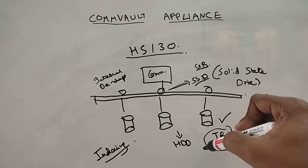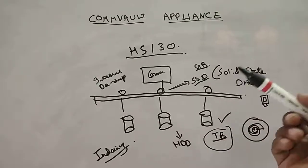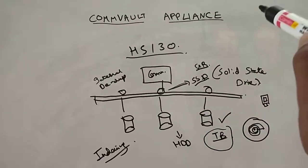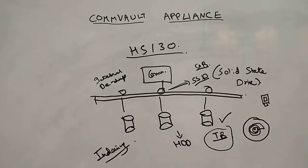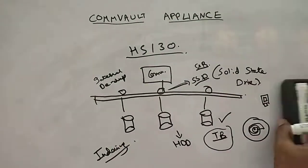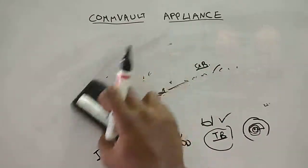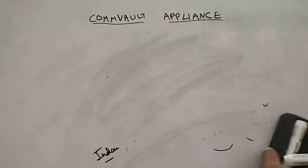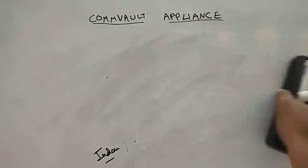Probably in future they will move everything to SSD, but for now SSDs are being used only for fast address I/Os and processing times. That's about HS130. These are the appliances that Commvault is currently offering. Also, this HS130 has the ability to actually do tiering. So what is tiering?